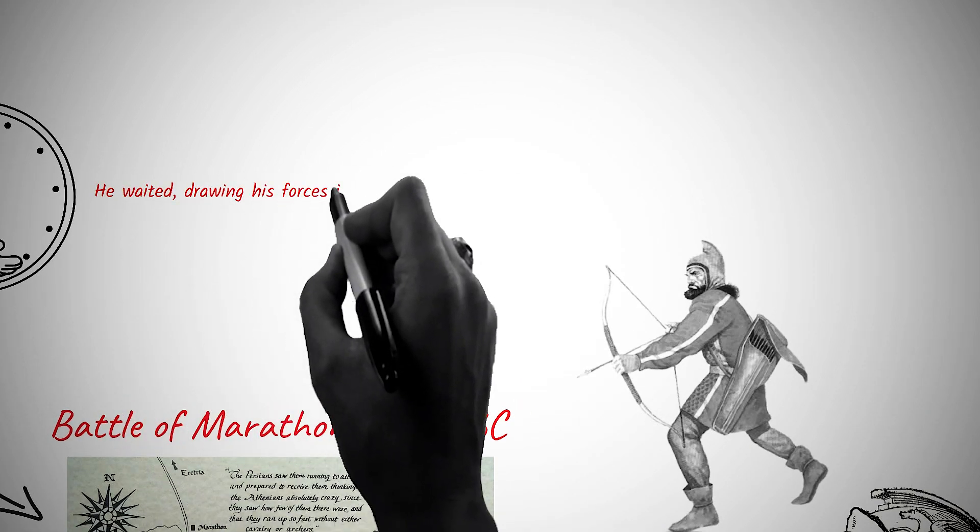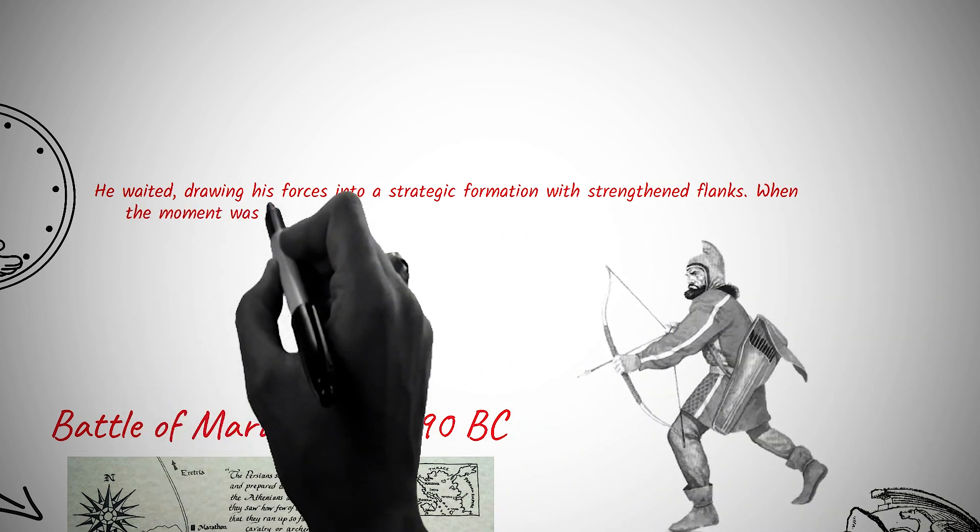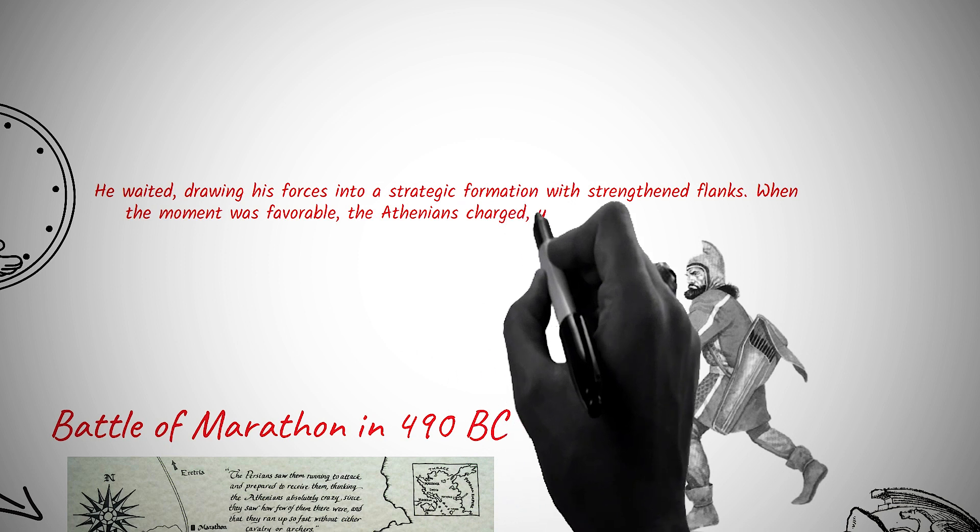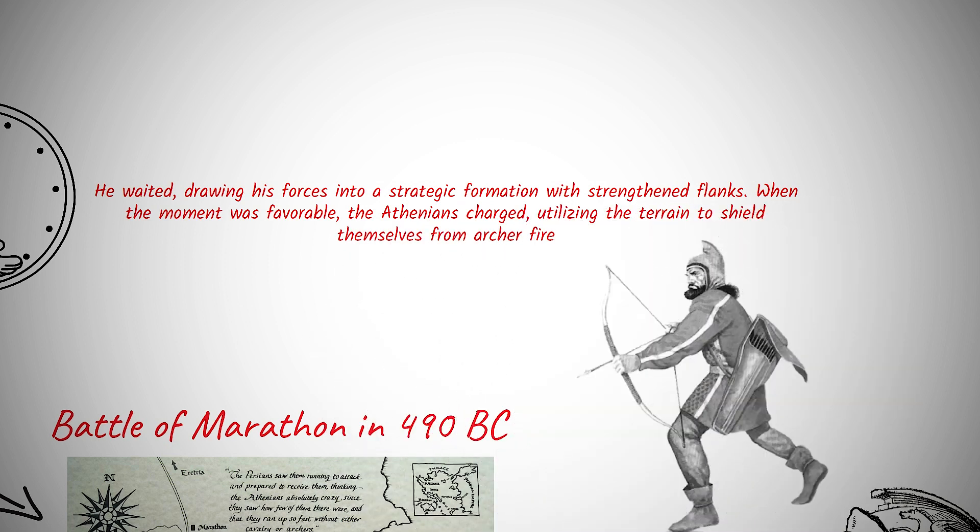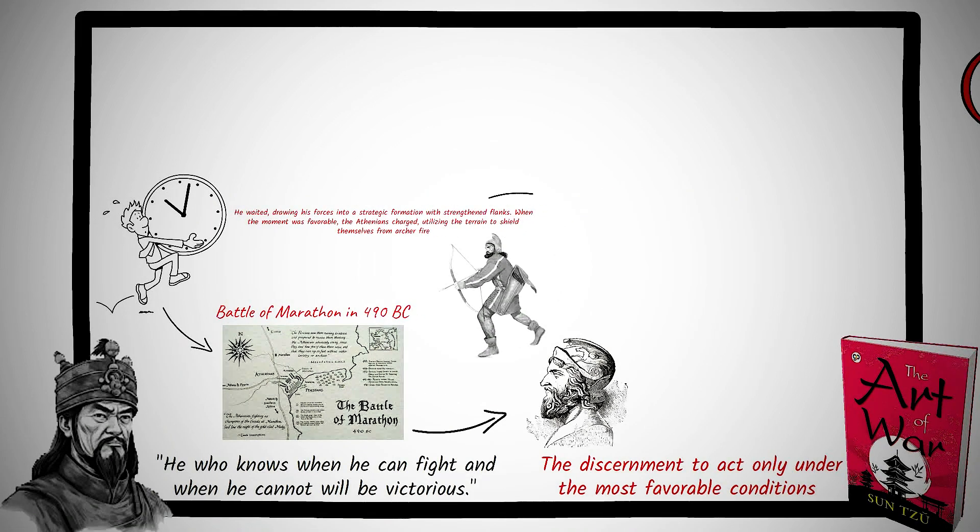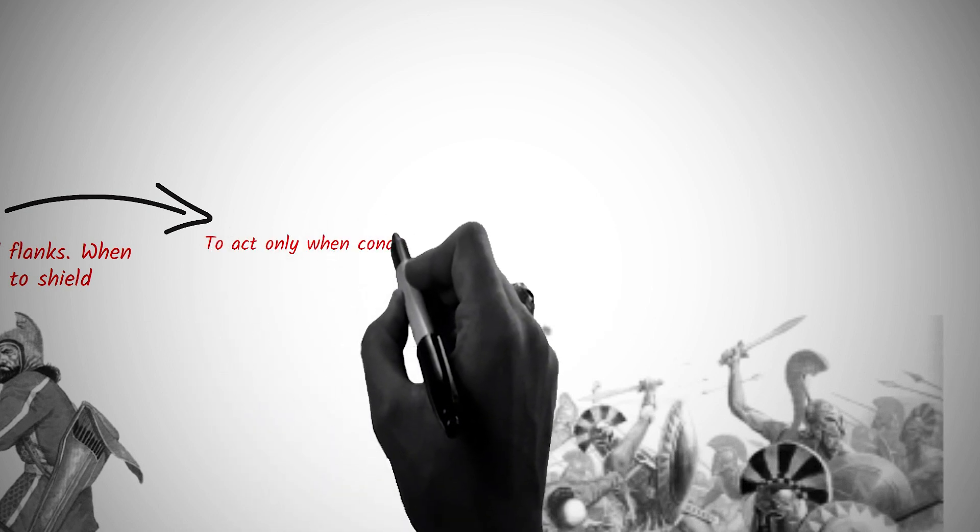Drawing his forces into a strategic formation with strengthened flanks, when the moment was favorable, the Athenians charged, utilizing the terrain to shield themselves from archer fire. The wings of Miltiades' formation swiftly outflanked and routed the Persian wings, leading to a significant Athenian victory. Rather than succumbing to the urgency of the moment, Miltiades exemplified the principle: to act only when conditions are most favorable.